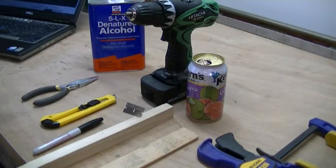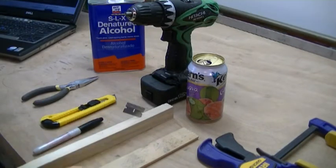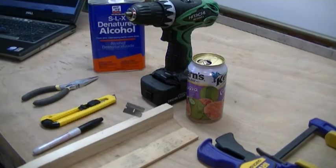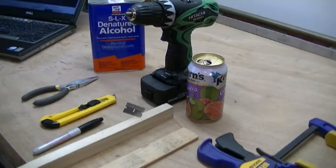So here's what I need: needle-nose pliers, box cutter, marker, a one-inch spacer, quarter-inch spacer, clamp, can, razor blade, drill, and some denatured alcohol. So we're going to get started on this project.